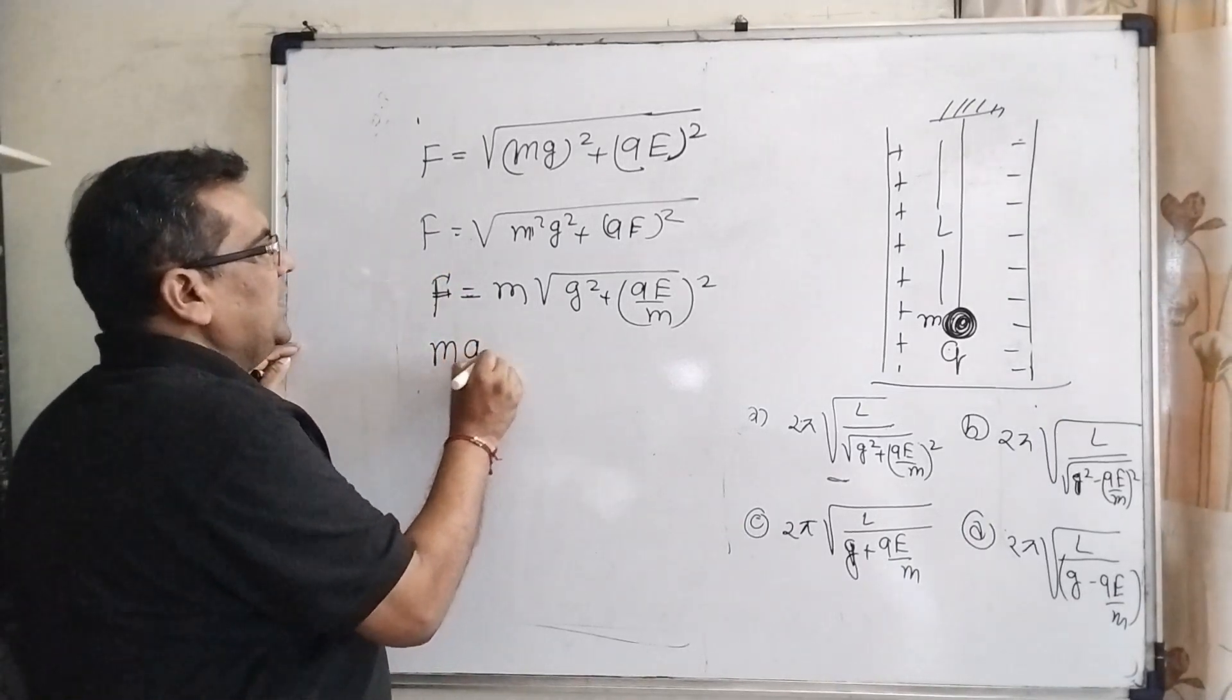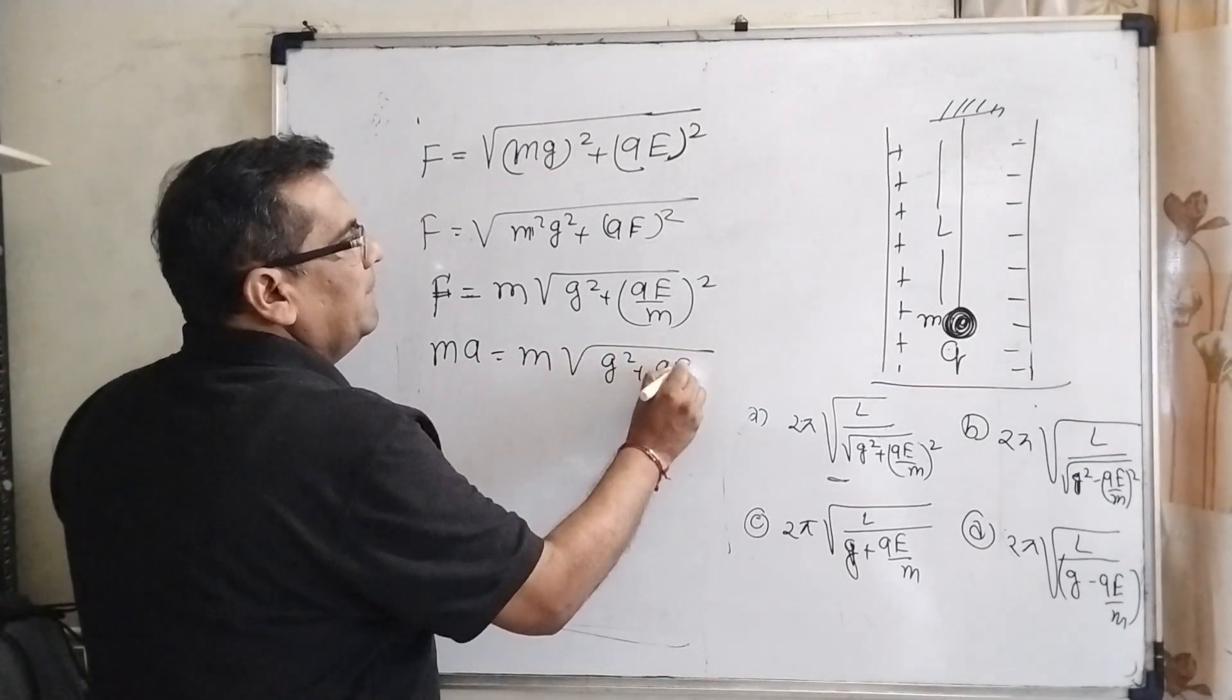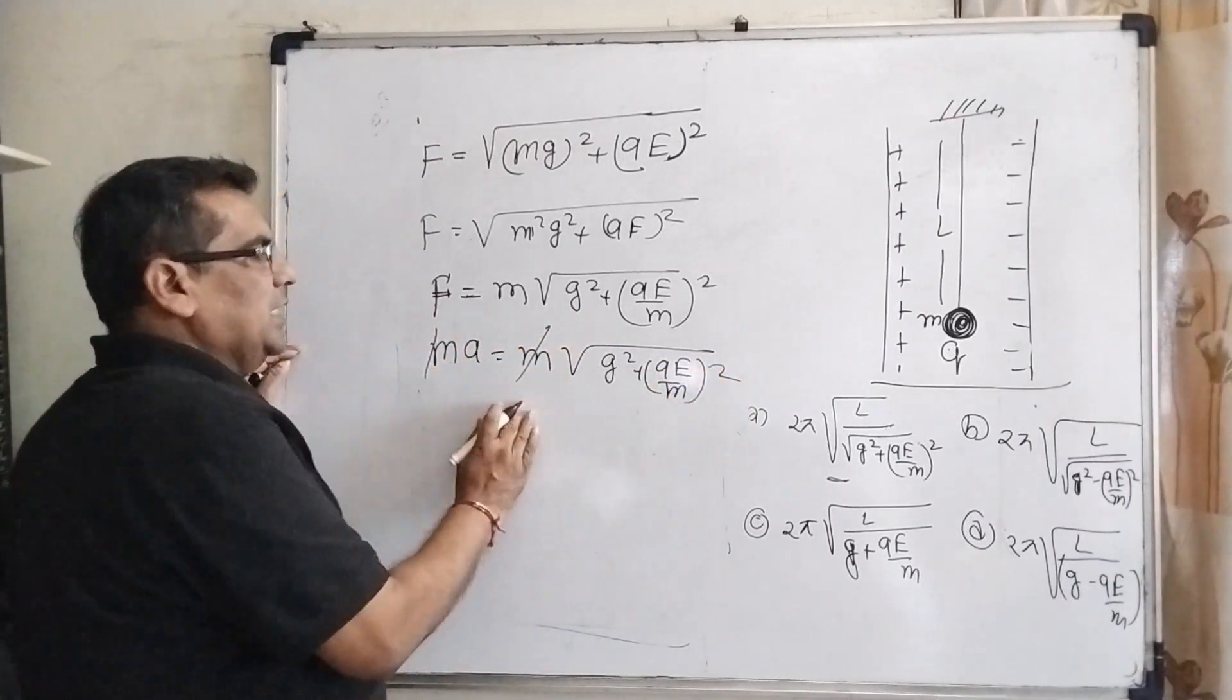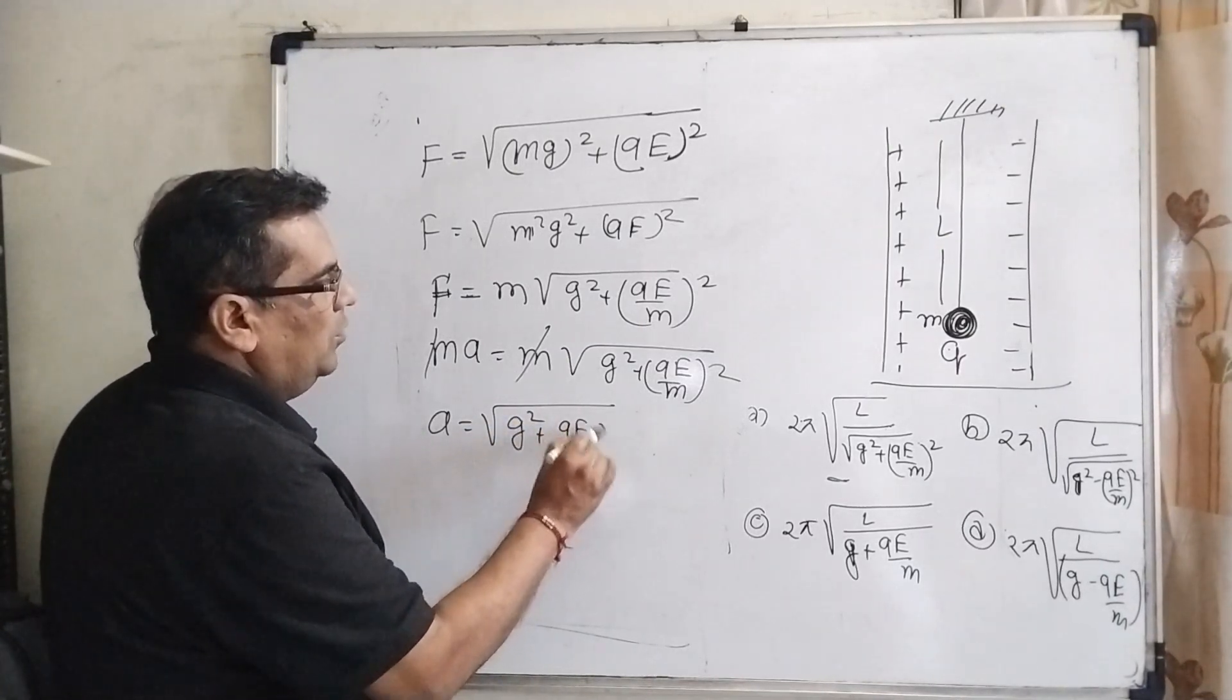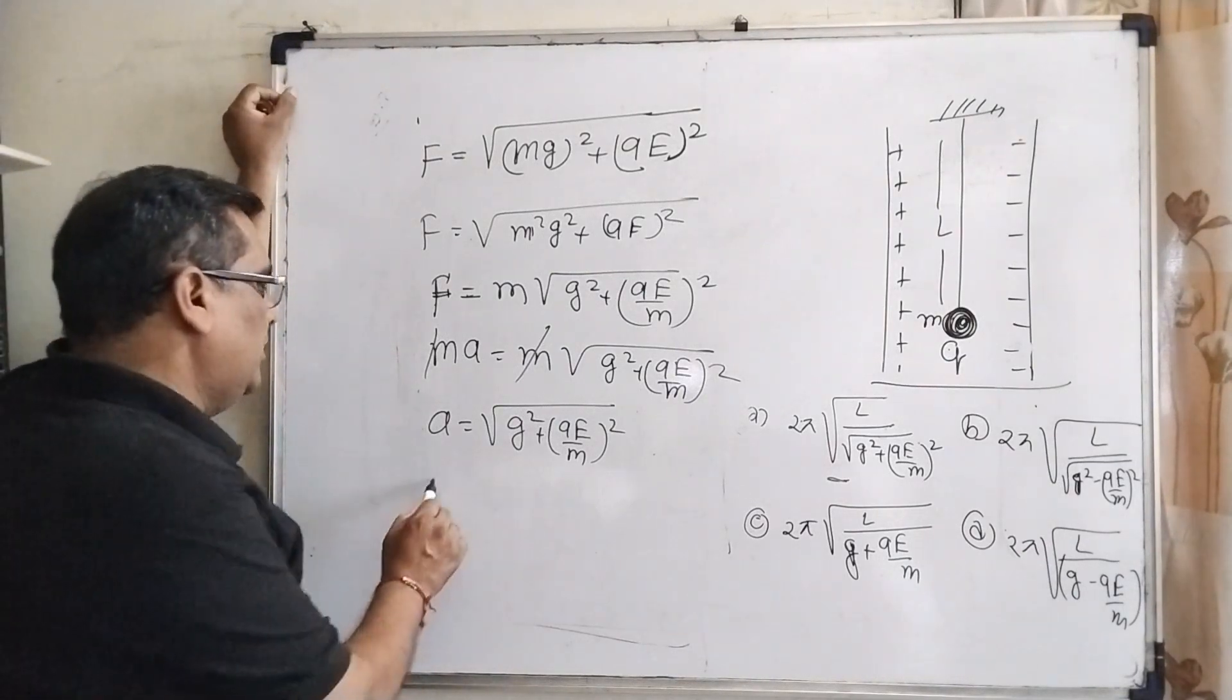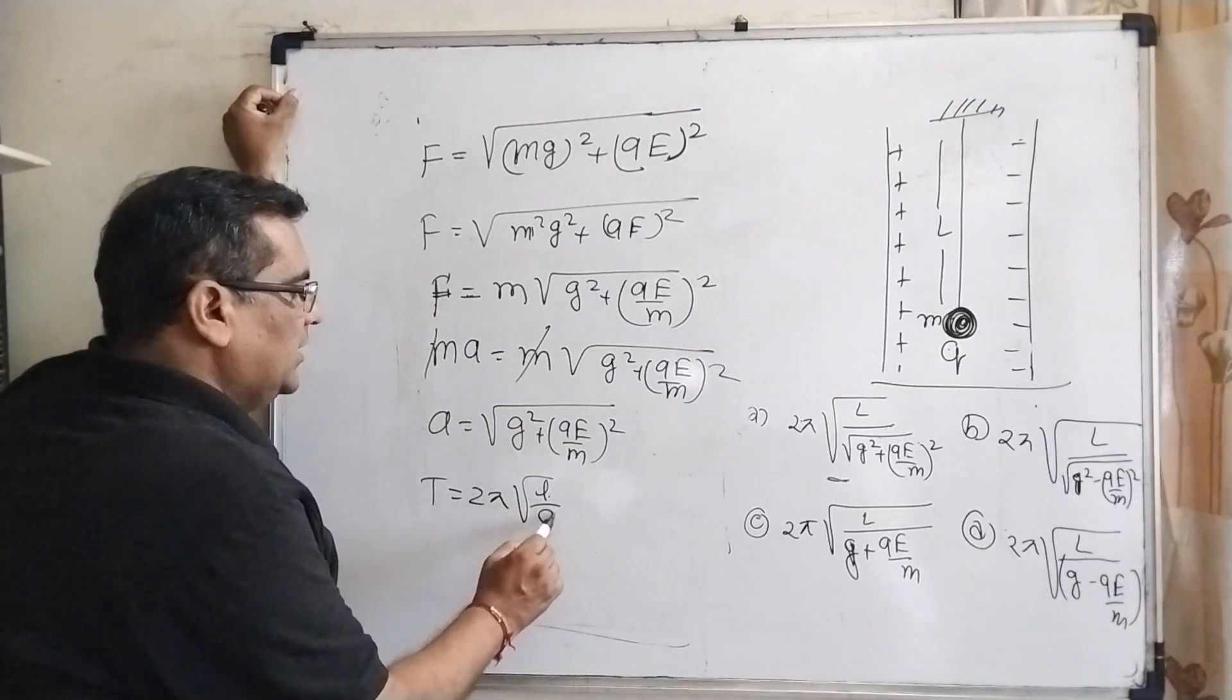Now you know that very well, force equals mass into acceleration. √(g² + (qE/m)²), M and M cancel out. Resultant acceleration is now √(g² + (qE/m)²). Now what is the formula of time period of simple pendulum?